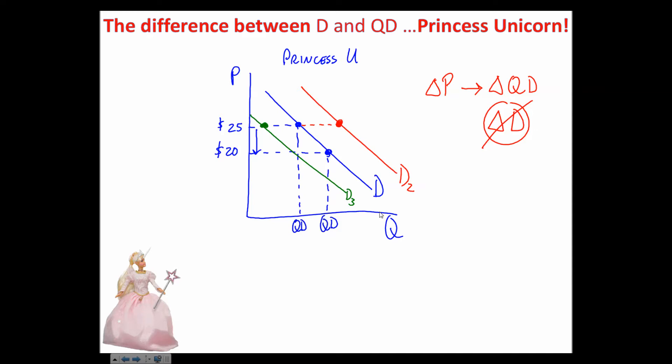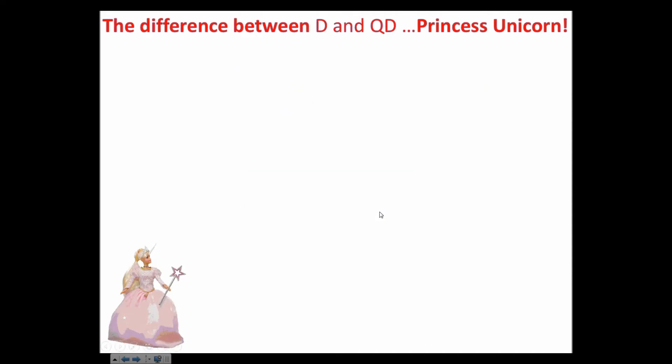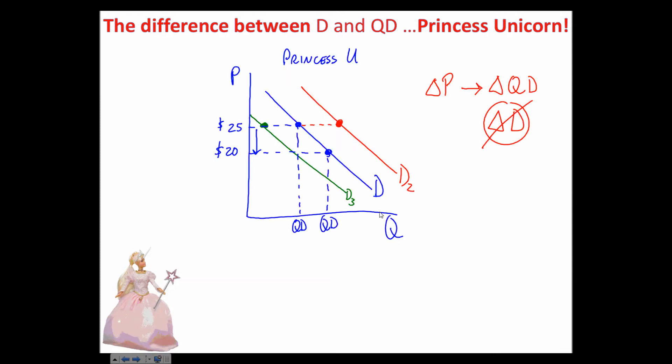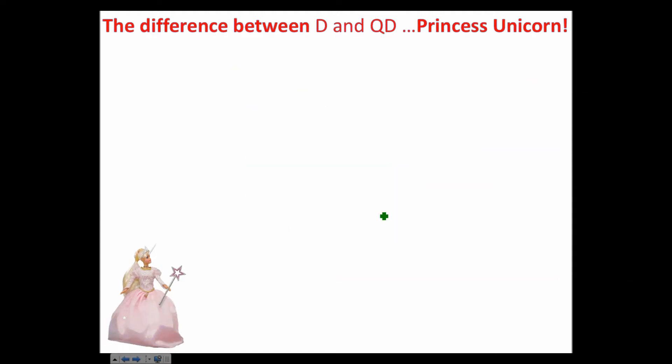So let's look at the factors that would actually change the demand. Let's double check though - we understand now that price changes change the quantity demanded. That's why when you change the price you get a point-to-point movement along the curve. Whenever demand changes, you change the actual curve. So let's make the demand change.